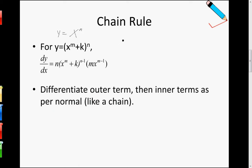So what we do now is we differentiate this big x first, to the power of n minus 1. This is what this thing is trying to say — we treat what's inside the bracket as a big x, differentiate this big x to the power of n to get n times big x to the n minus 1, and then we multiply it by differentiating what's inside the bracket, which is the big x. So we differentiate first the outer term, and then the inner term, like a chain. That's how the name got derived from.